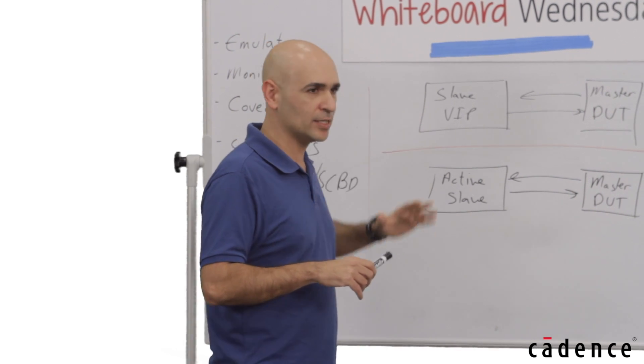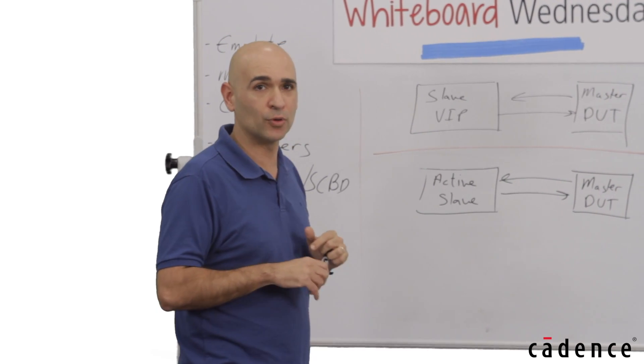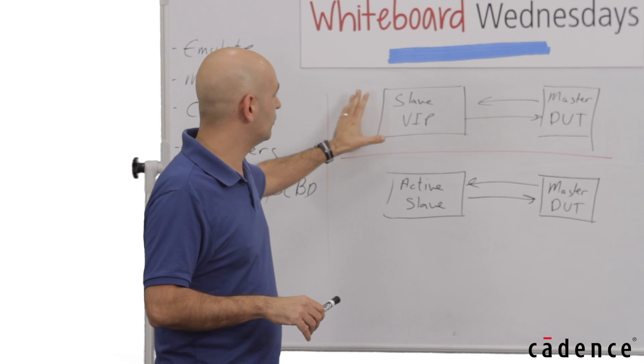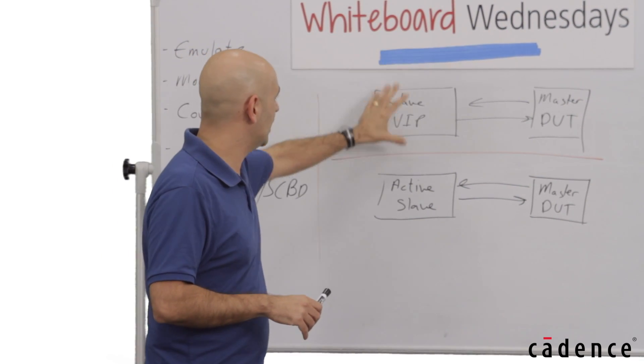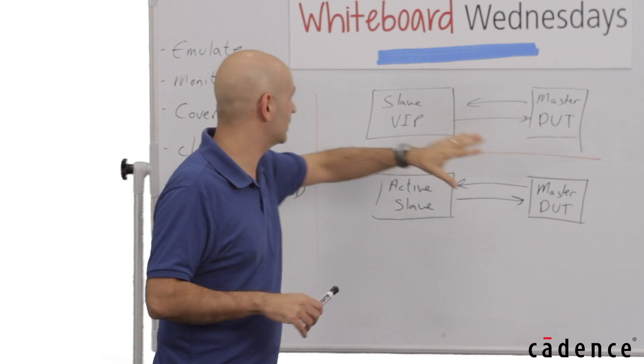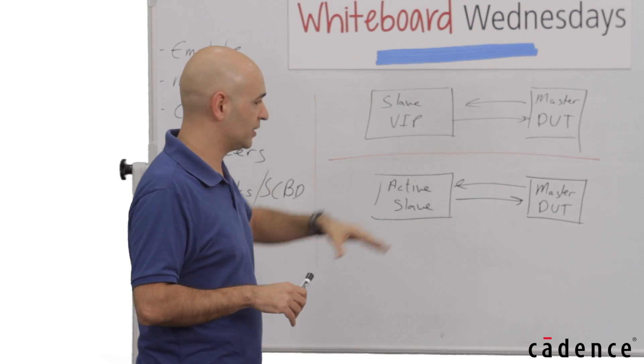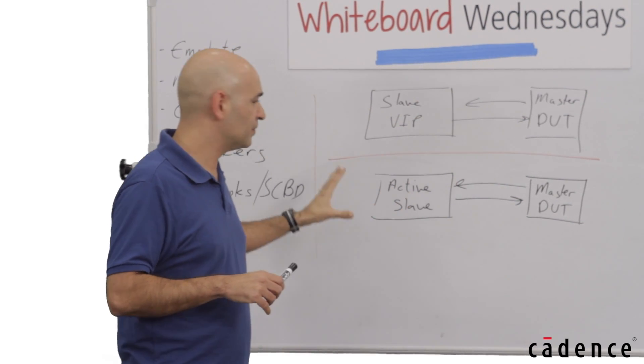So we basically had two options for our architecture. One approach is the one that I like to call the all-in-one approach. In this approach, you basically have all the functionality in a single agent, including emulating the slave and monitoring the master and the coverage and checkers and everything.